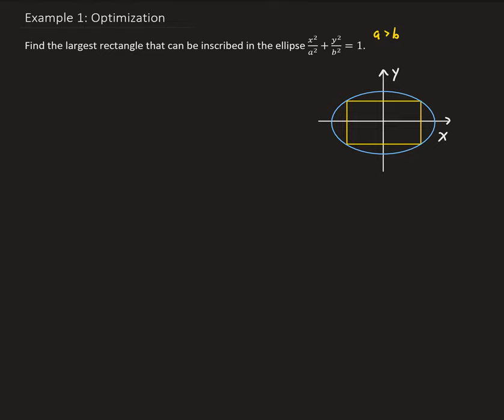To do this, we're going to use optimization. We're going to focus on this part in the first quadrant. We're going to optimize this portion of the rectangle, and then because of the symmetry, we can multiply the result by four to get the total area.